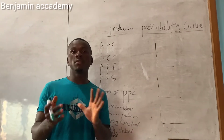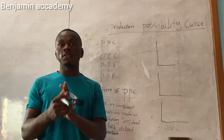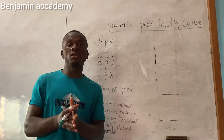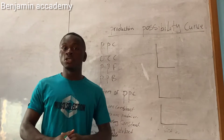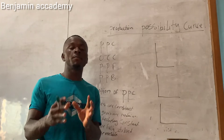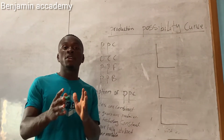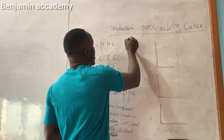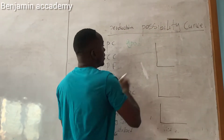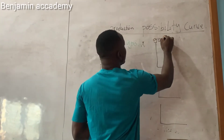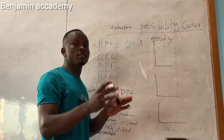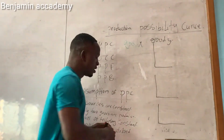In this video we're going to give you a clear explanation of the production possibility curve. The production possibility curve explains a country producing two goods — it can either be good X or good Y.